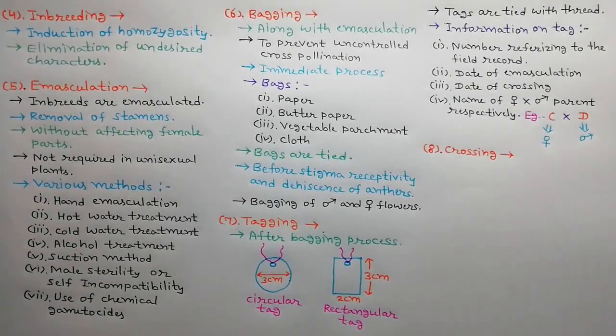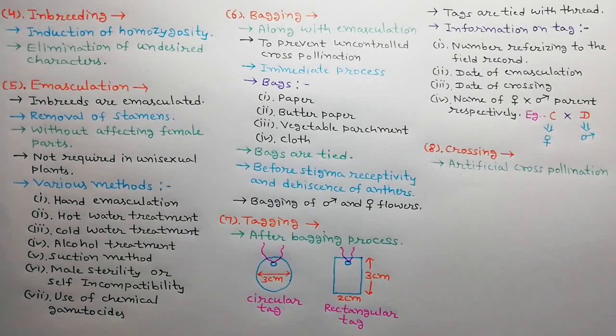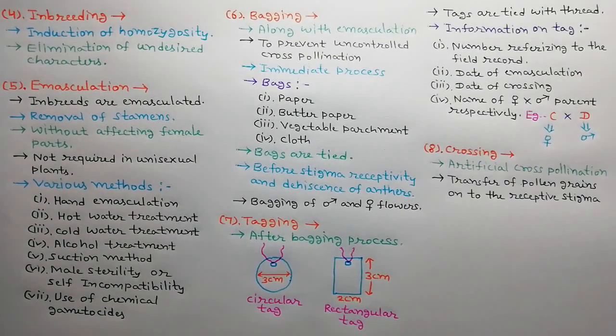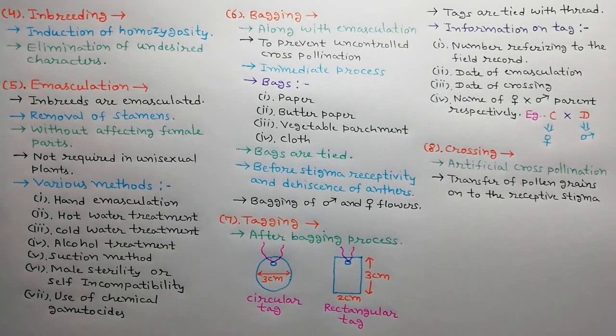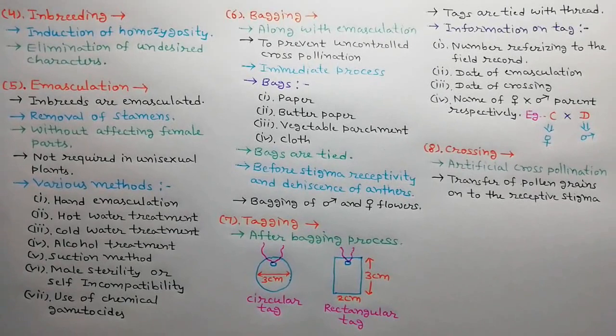The eighth step is crossing. It can be defined as the artificial cross pollination between genetically unlike plants. In this method, mature fertile and viable pollens from the male parent are placed on the receptive stigma of emasculated flowers to bring about fertilization.